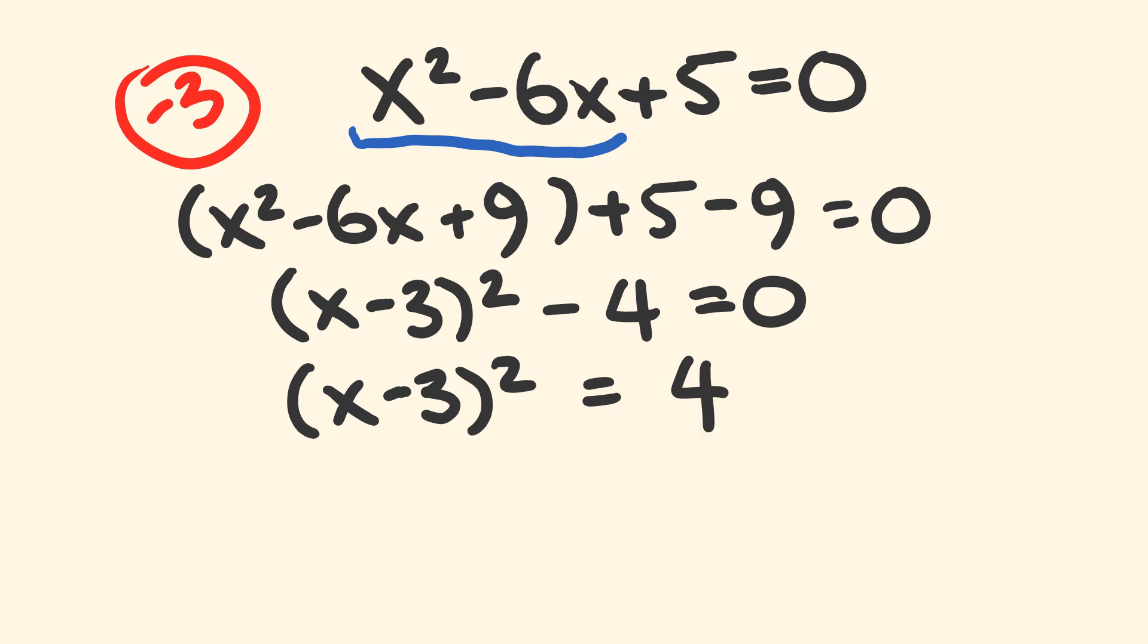Now we're going to square root both sides. When we square root this side, the square root of this number being squared is just the part in the brackets. We have x - 3 = √4. But it's not just that, it's ±√4. We have to take both the positive and negative value. What's the square root of 4? That's simple, it equals 2.